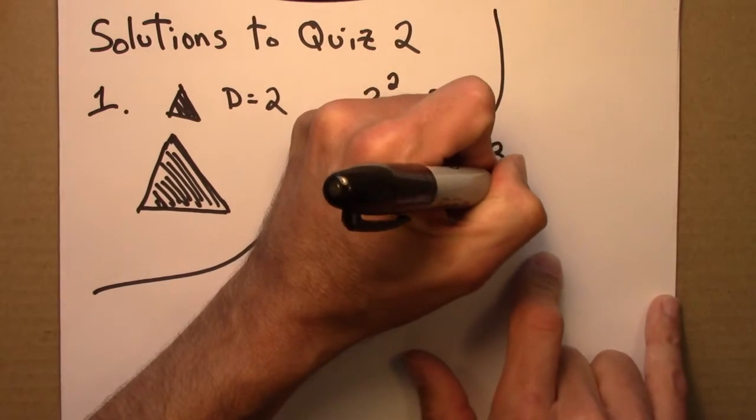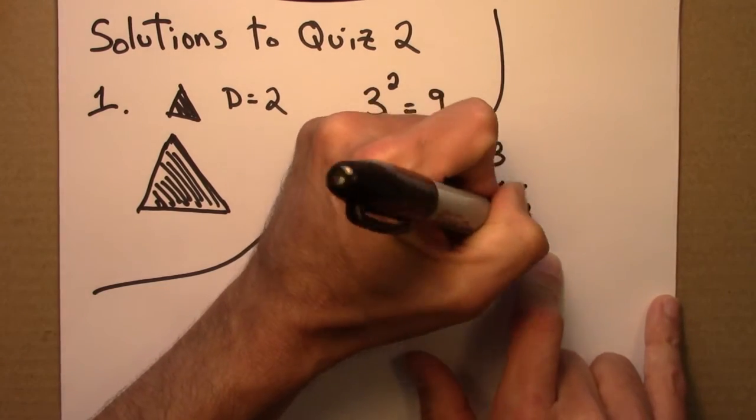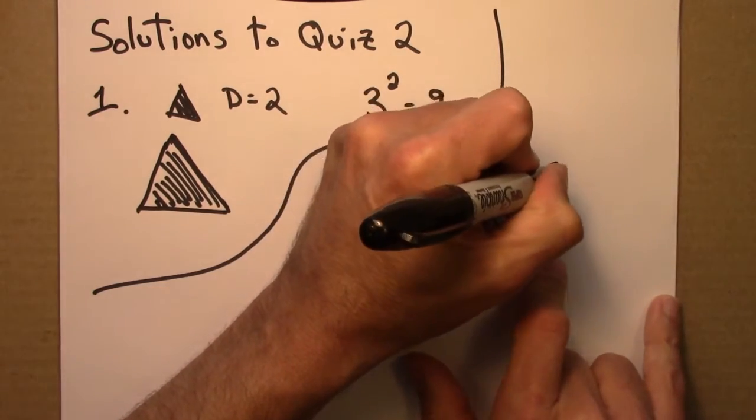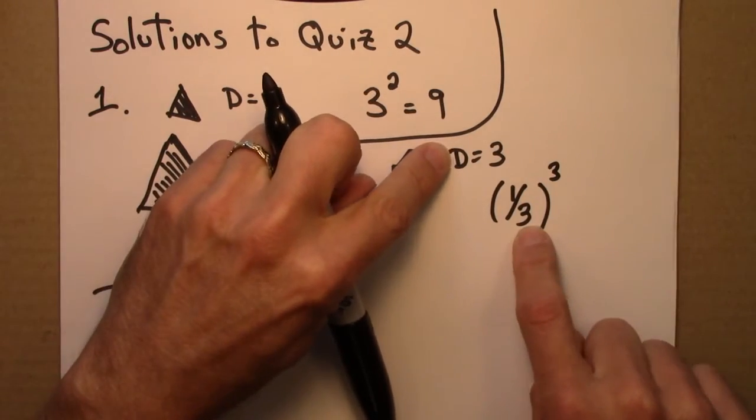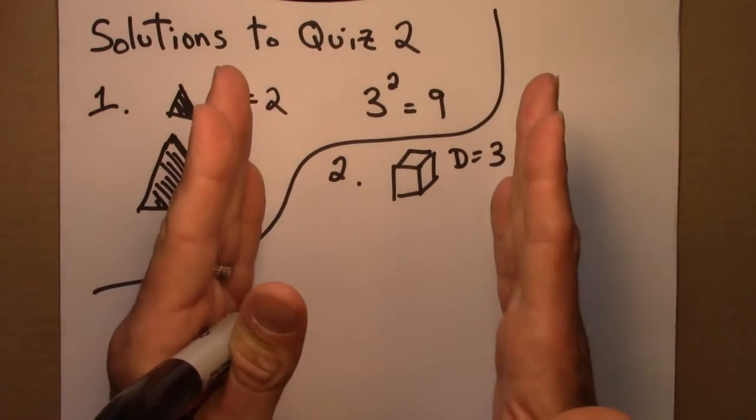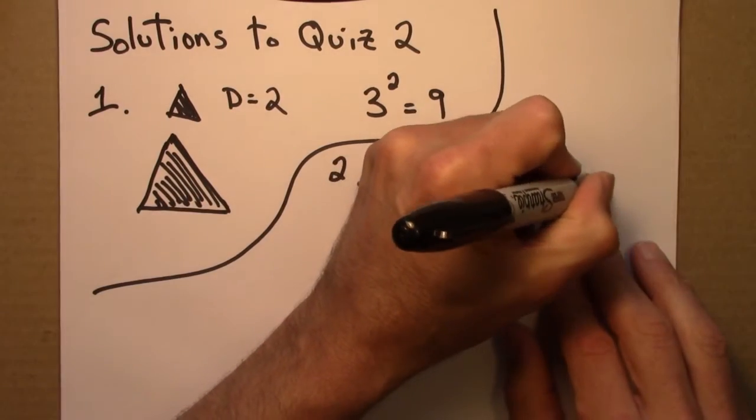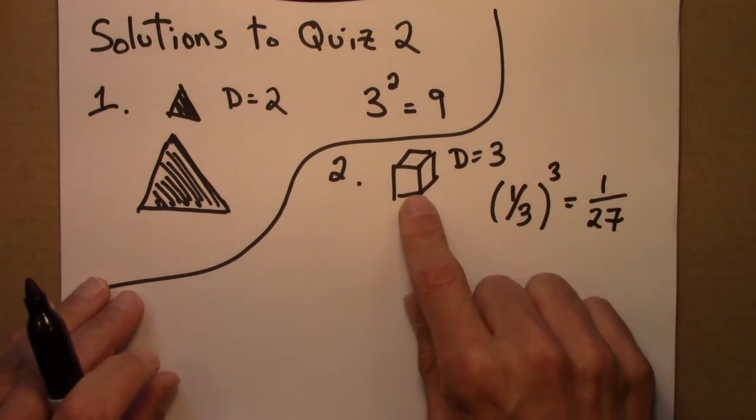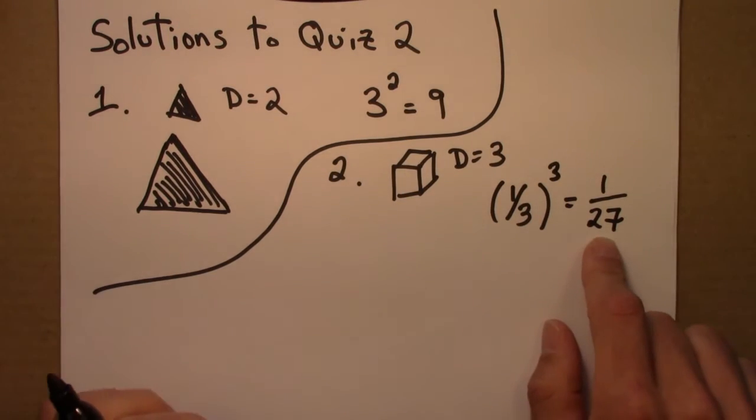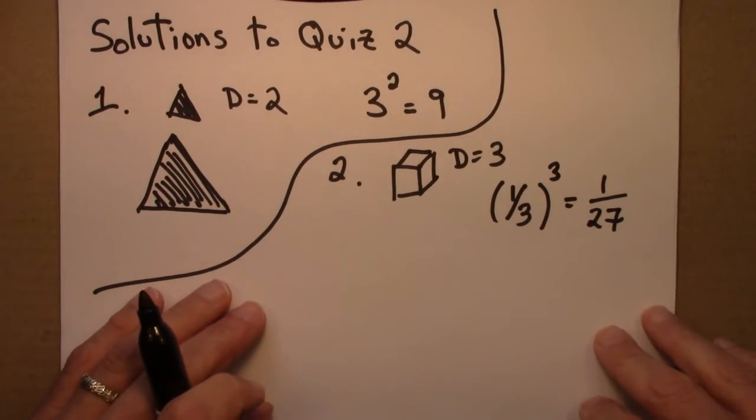We've got a third cubed. This 3 is because the dimension is 3. This is because we're shrinking by a factor of 3. That's 1 over 27. The volume of the smaller cube is a 27th the volume of the large cube.